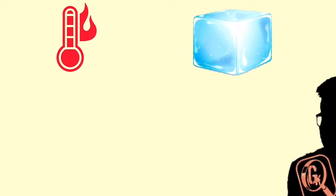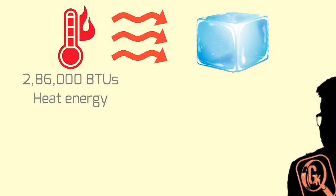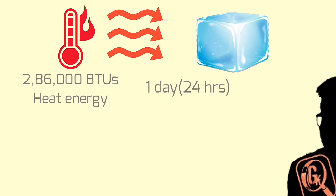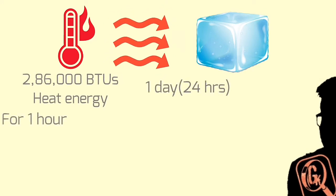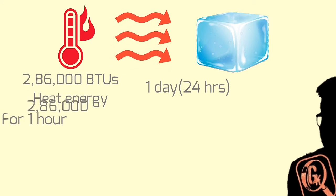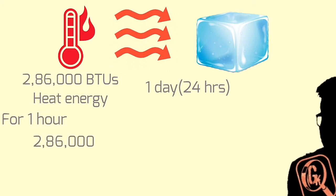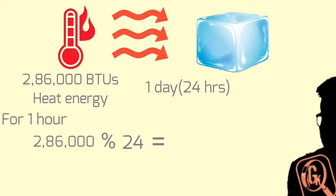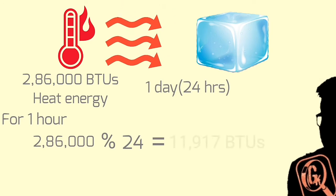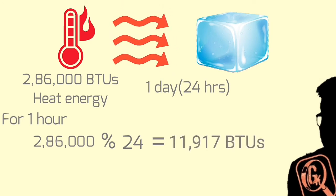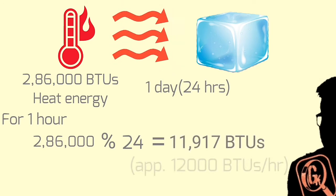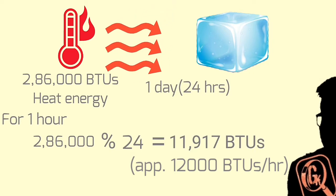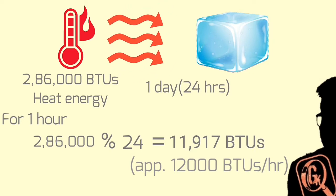This is 12,000 BTUs, which is standardised as 1 ton. Approximately 12,000 BTUs per hour is the standard measure for 1 ton of cooling capacity.